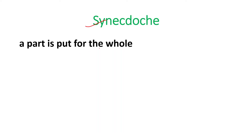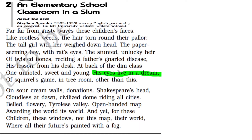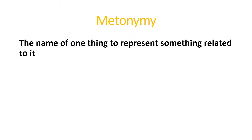Now let us move to the next poetic device: synecdoche. Synecdoche means a part is put for the whole. When a part is put for the whole, we call it synecdoche. For example, 'his hands in the murder' — 'hands' means his involvement; hands stands for the whole person. Also, 'his eyes live in a dream' — 'his eyes' stands for he himself. It is not his eyes that dream but he himself dreams. So synecdoche is the poetic device used here.